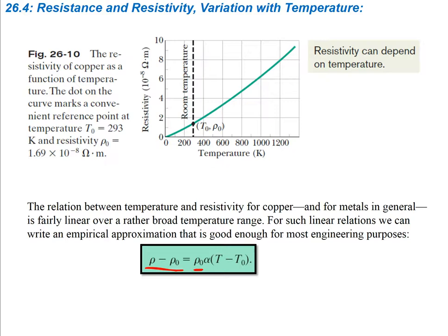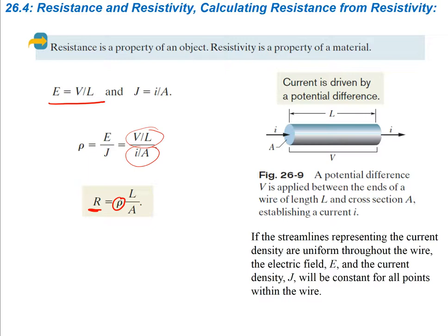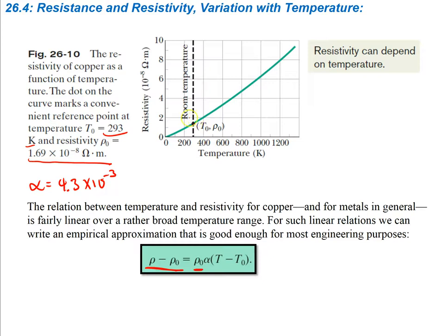For copper, the reference resistivity is 1.69 × 10⁻⁸ ohm·meters and alpha is 4.3 × 10⁻³. Looking at the graph, as temperature increases, resistivity also increases. So if you want really low resistance, you want to cool the object down as low as possible, and that will give you the least resistance.